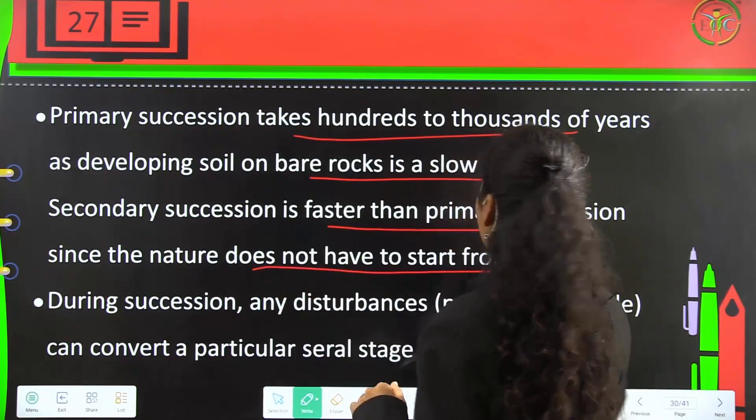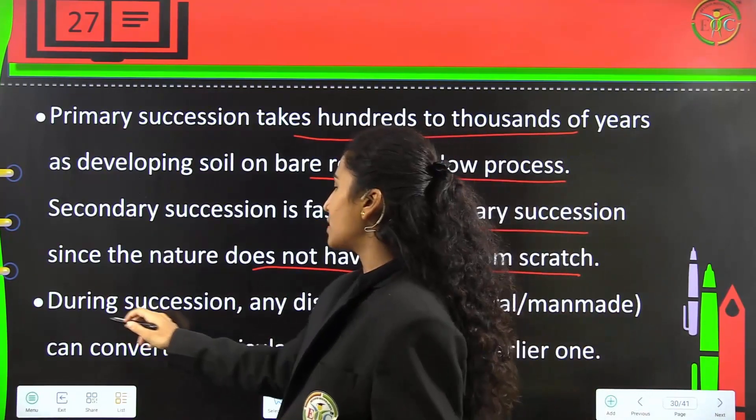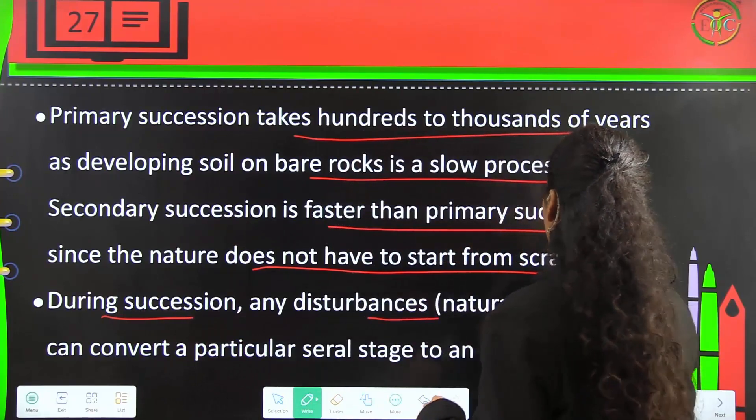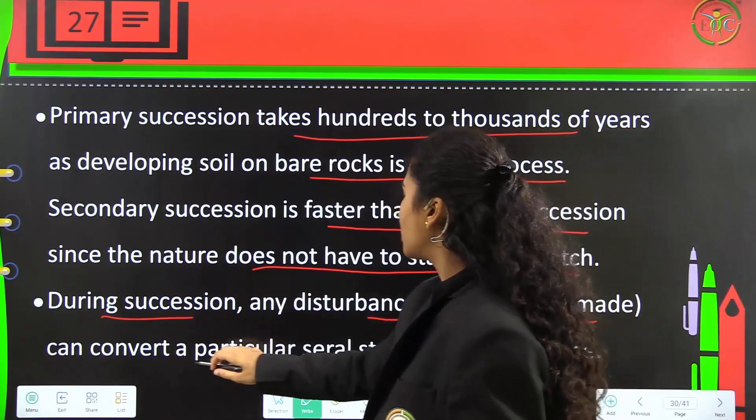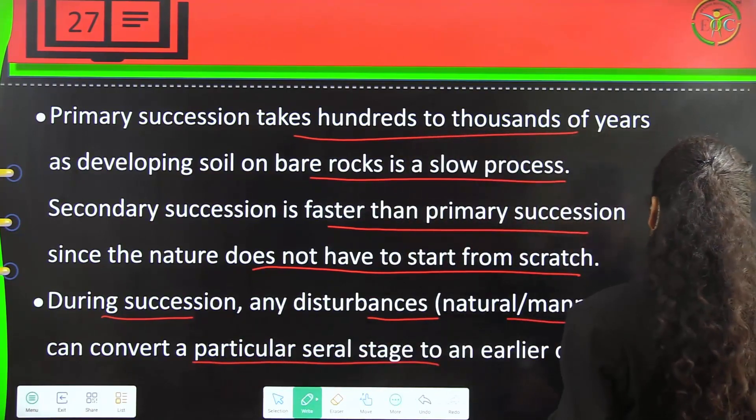During succession, any disturbances, either natural or man-made, can convert a particular seral stage to an earlier one.